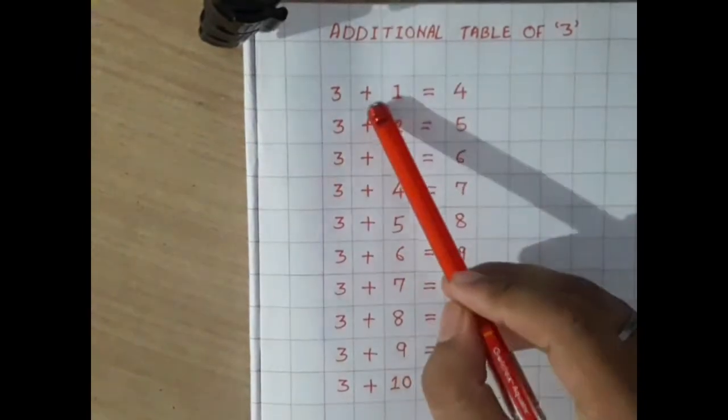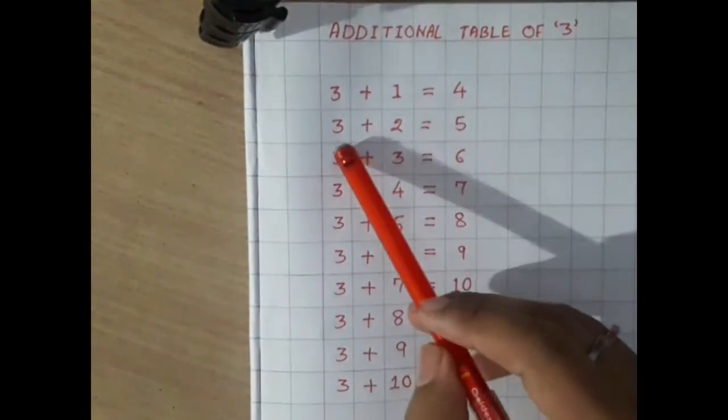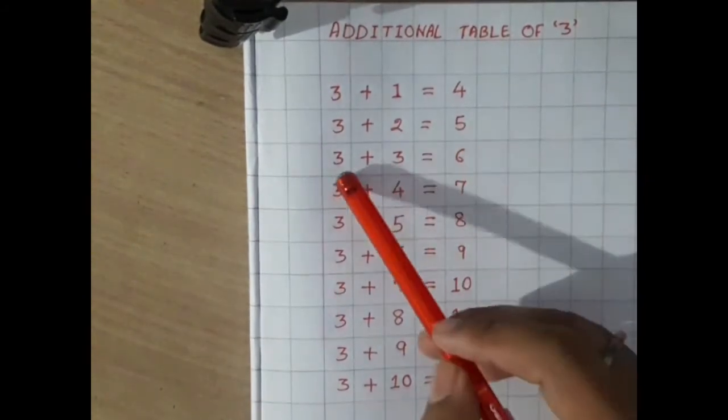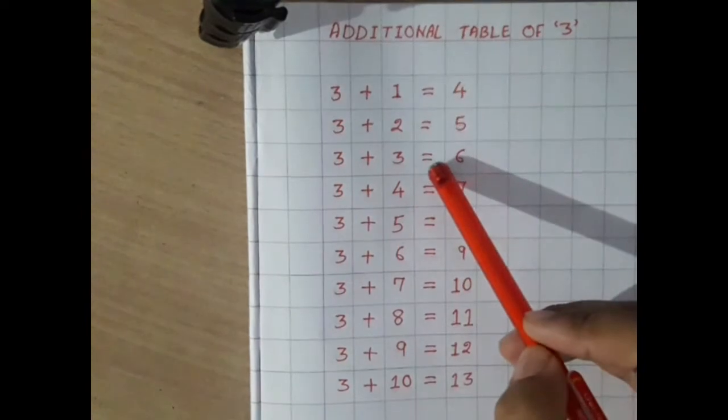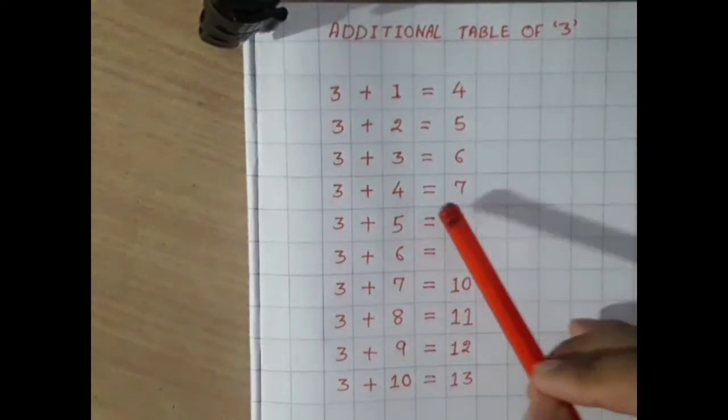3 plus 1 equals 4, 3 plus 2 equals 5, 3 plus 3 equals 6, 3 plus 4 equals 7.